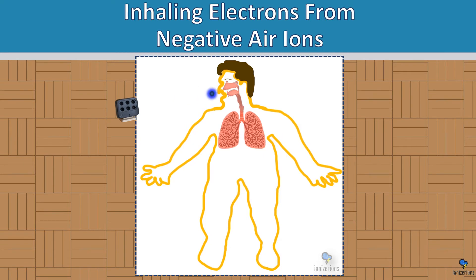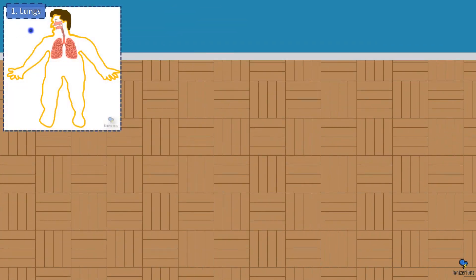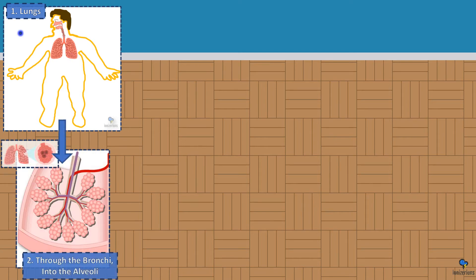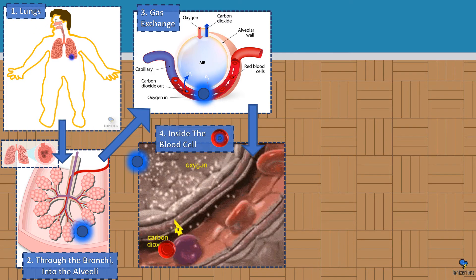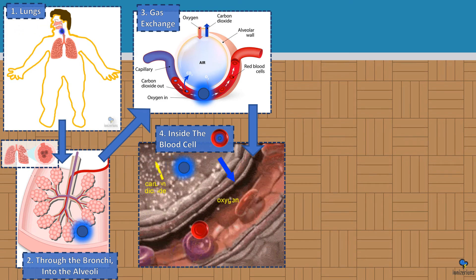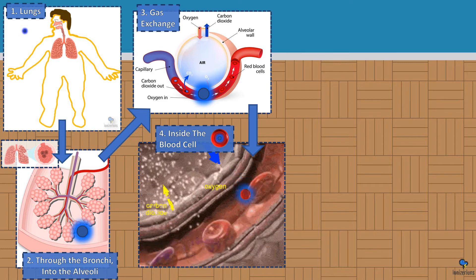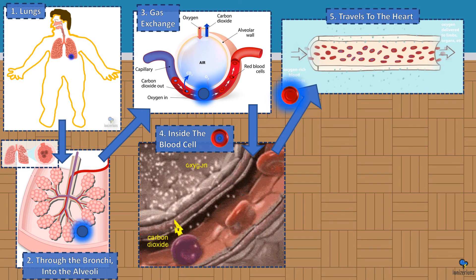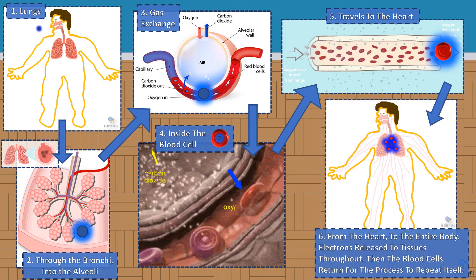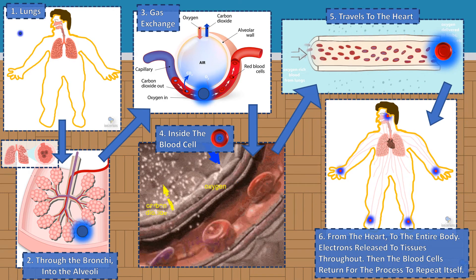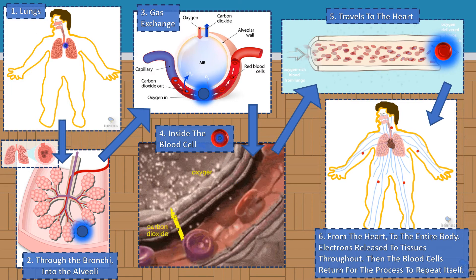So how do we actually inhale these ions? An air ion enters the respiratory system and travels deep into the lungs, going through the bronchi into the alveoli. This is where gas exchange happens. The ion goes through gas exchange and attaches itself to a red blood cell, traveling through the body to the heart — where the ion now has access to the entire body and can deliver the extra electron where it's needed.